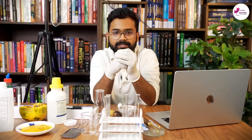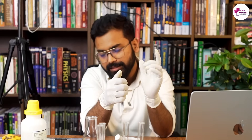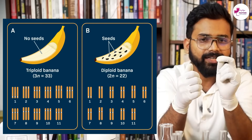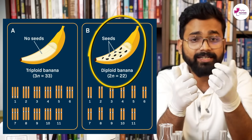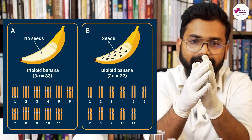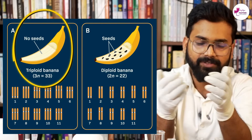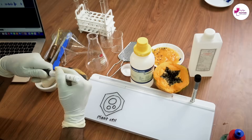Why do we choose banana? We usually choose plants that have a high chromosome number or more sets of chromosomes. In the market, a seeded banana is more likely diploid with 22 chromosomes, but a seedless banana is more likely triploid, produced by a different technique, with a chromosome number of 33. Our aim is to extract DNA from it.